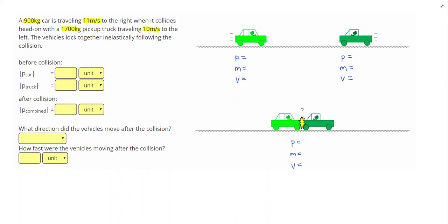Let's start filling out some givens. The car is 900 kilograms and initially traveling 11 meters per second to the right. The truck is 1700 kilograms and initially traveling 10 meters per second to the left. I'm going to put a negative sign on there. Momentum is the one time I like to use negative numbers, so since this truck is traveling to the left, we're going to put a negative sign on that velocity.